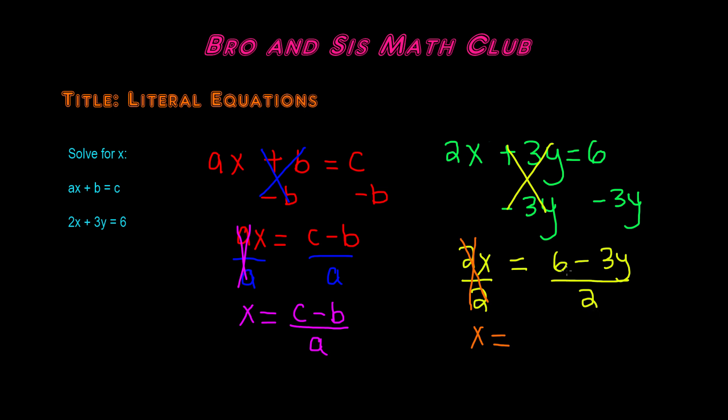So the 2s cancel each other out and we're left with x is equal to 6 minus 3y over 2, or if we simplify, let's divide 6 by 2 and minus 3y by 2. 6 by 2 gives us 3.